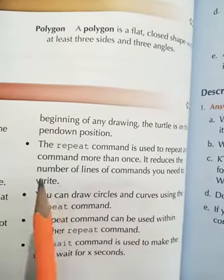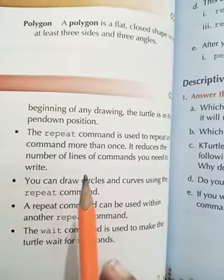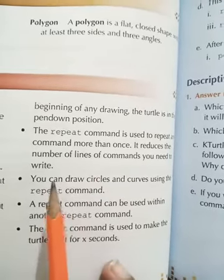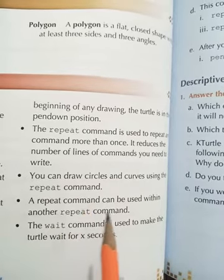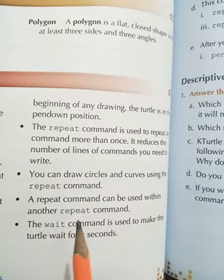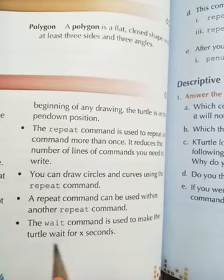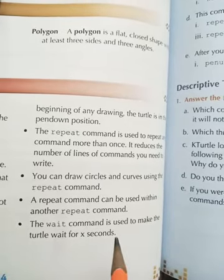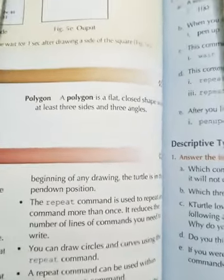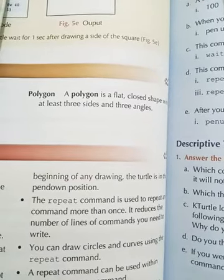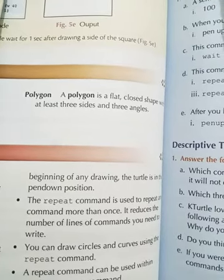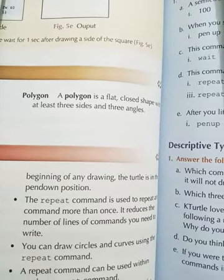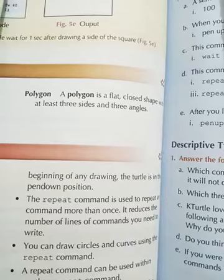The commands pen up and pen down do not take any input. The pen down command is used only after the pen up command because at the beginning of any drawing, the turtle is in the pen down position. The repeat command is used to repeat any command more than once; it reduces the number of lines of commands you need to write. You can draw circles and curves using the repeat command. A repeat command can be used within another repeat command. The wait command is used to make the turtle wait for x seconds.